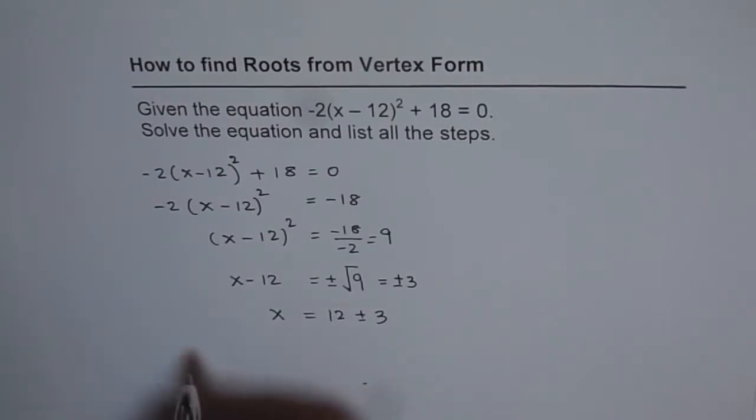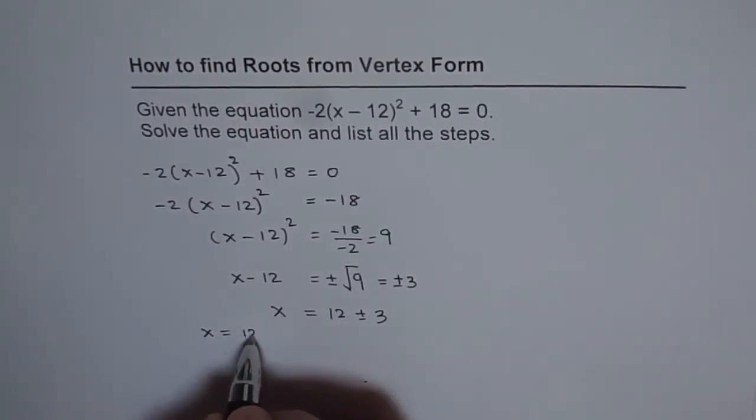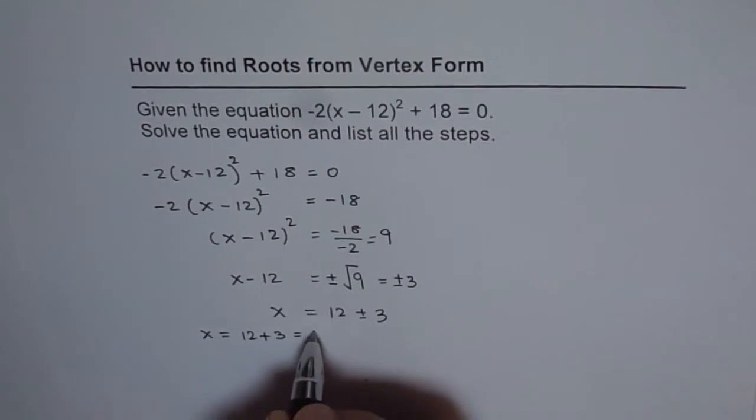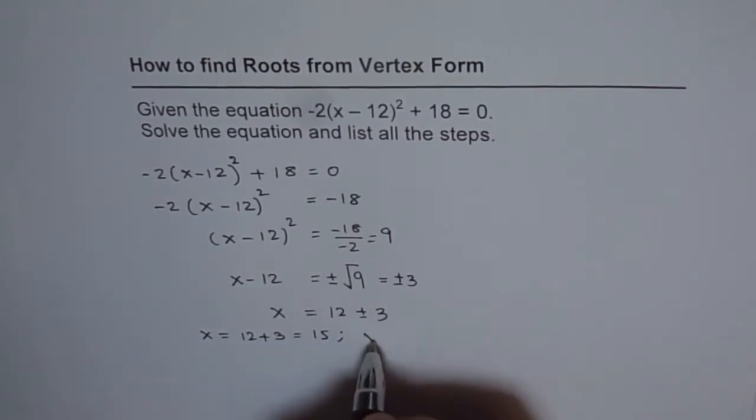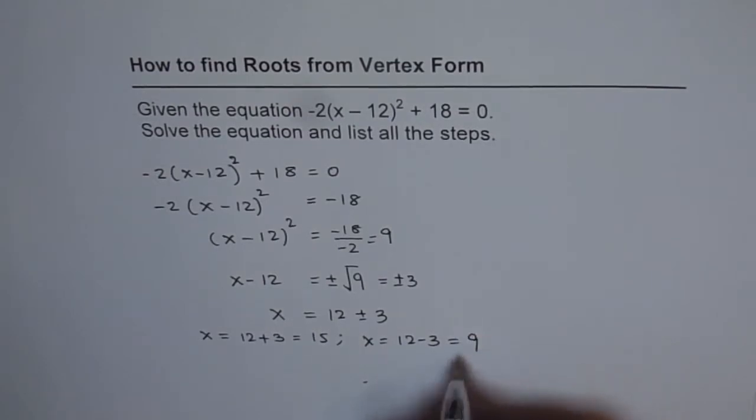One solution is x = 12 + 3, which is 15. The other is x = 12 - 3, which is 9. You have two solutions to the given equation.